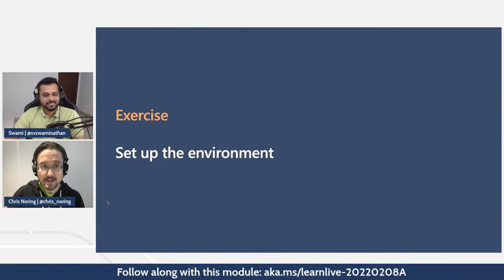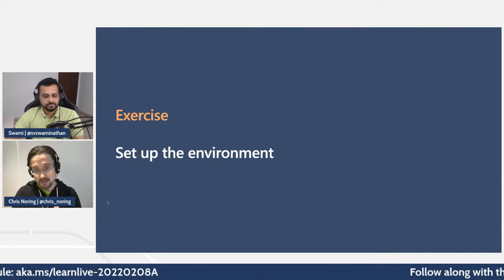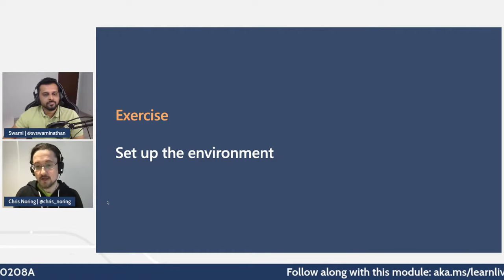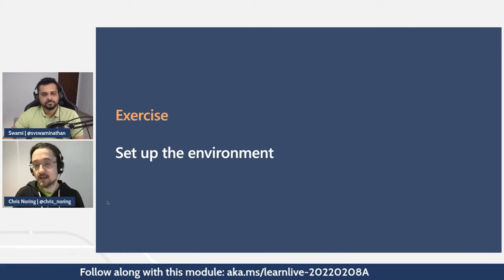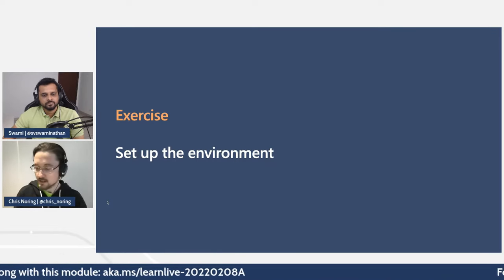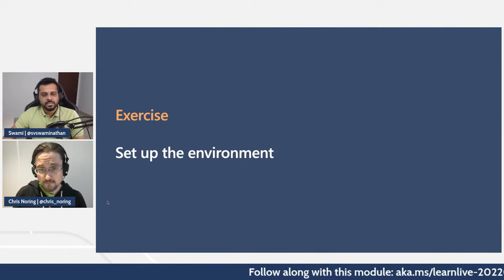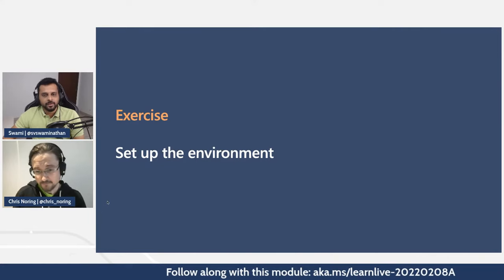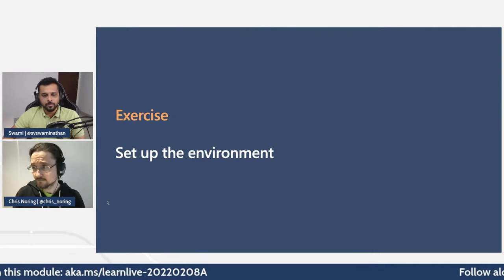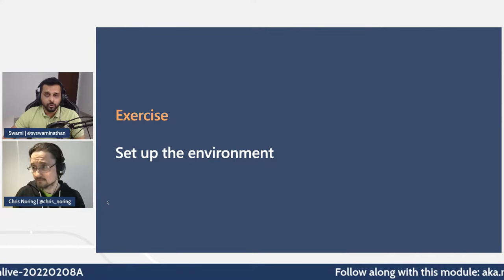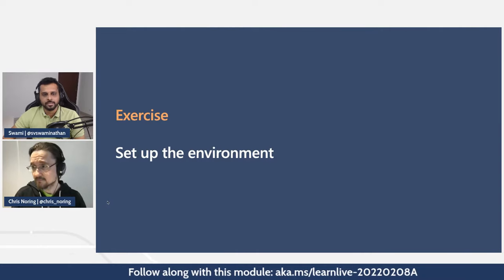There are three exercises today. In the first exercise, we set up our environment and deploy the application to Azure Kubernetes Service. The entire source code is on GitHub with scripts available to run and set up the environment automatically, so we don't have to do anything manually. It takes about 10 minutes to provision a new AKS cluster and an ACR — Azure Container Registry — and then we can start modifying and re-deploying the application.